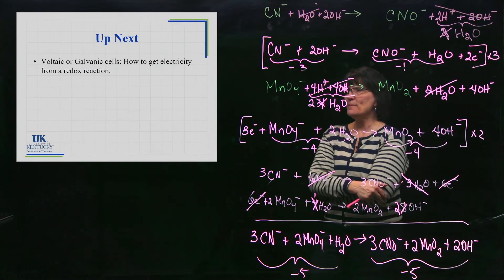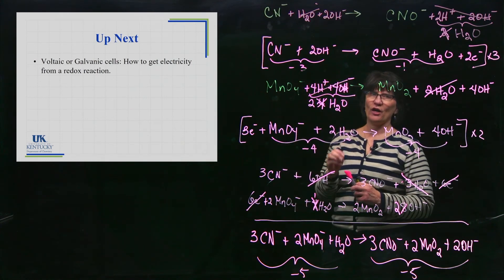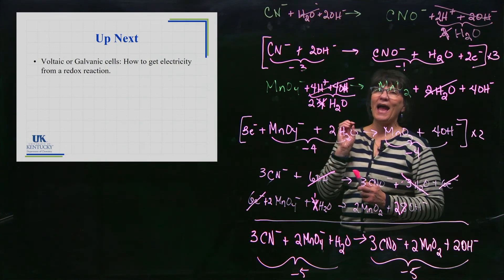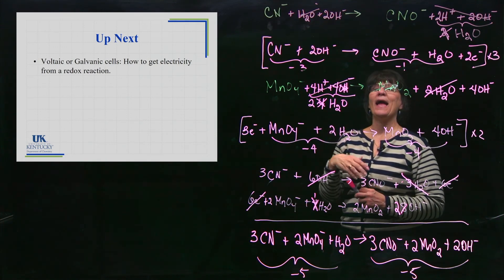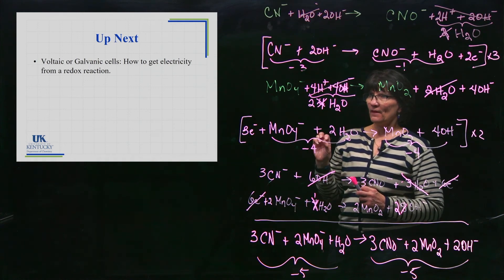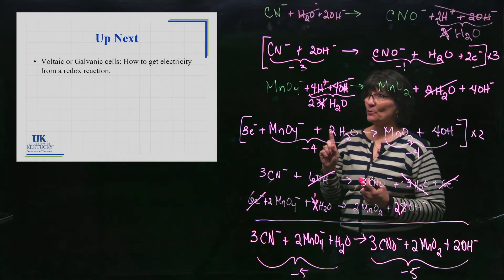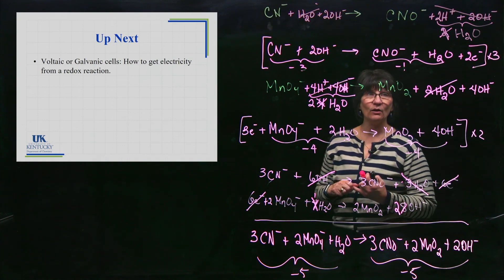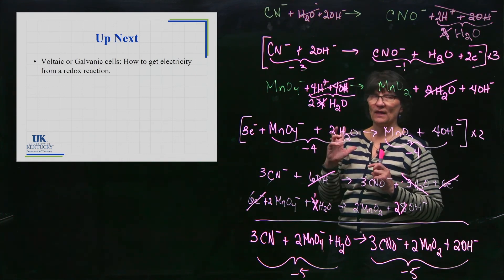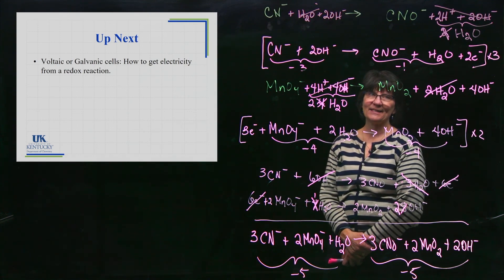Up next, we're going to get to the heart of electrochemistry and see how you get electricity out of redox reactions. The apparatus we use is called a voltaic cell, or a galvanic cell — two different names for the same thing. We'll focus on that in our next lesson.